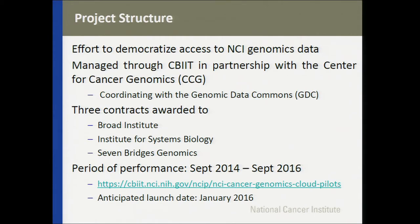This is NCI's effort to democratize access to this genomics data. It's managed through CBIT in partnership with the CCG, coordinating closely with the Genomic Data Commons. We've awarded three contracts: one to Broad, one to Institute for Systems Biology, and one to Seven Bridges Genomics. Our period of performance started in September 2014 and goes to September 2016. Our anticipated launch date is January 2016, so fairly shortly you'll be able to start analyzing data using this.